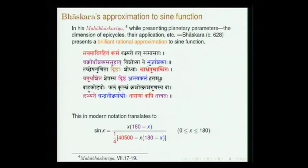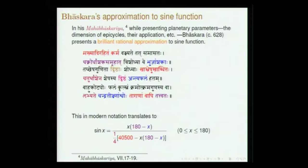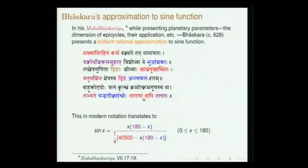He is actually describing a process of computing planetary position and incidentally gives this approximation which can be employed to compute the sine function. He says 'Labhyate Chandra Thikshnamshu oho Taranam Vapitathvataha' — whether it is sun ('Thikshnamshu,' the one who has scorching rays) or moon or stars. This is applicable over the range 0 to 180. Usually the table is presented only up to 90 degrees, but this formula also captures the symmetry of the sine function.